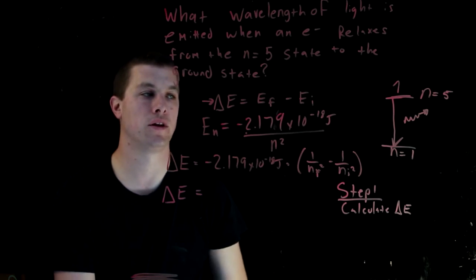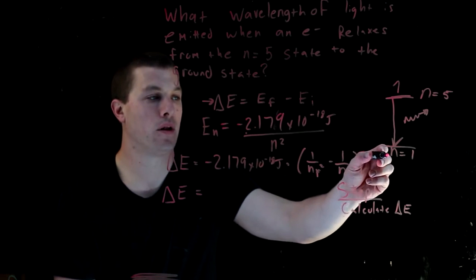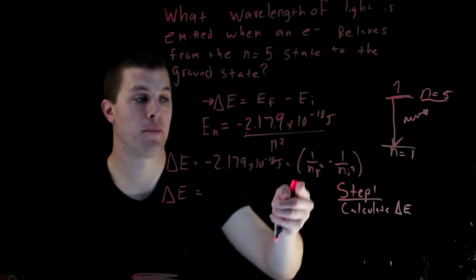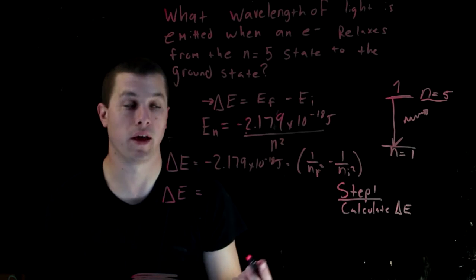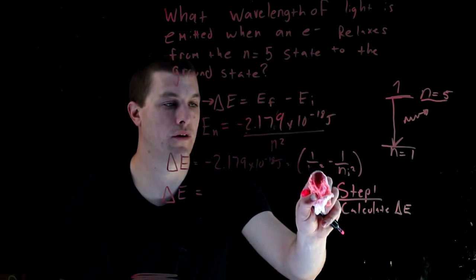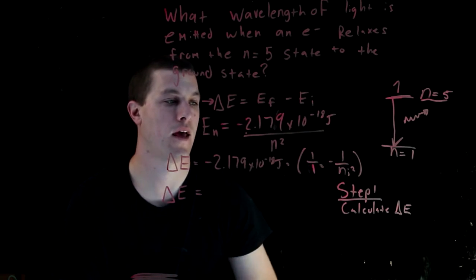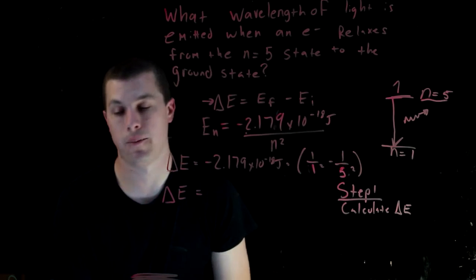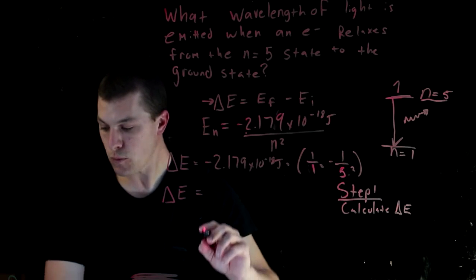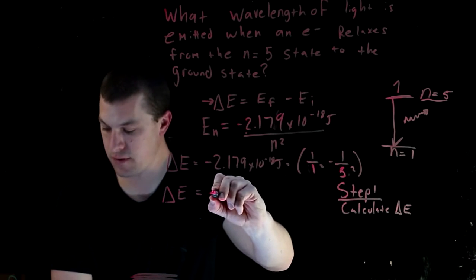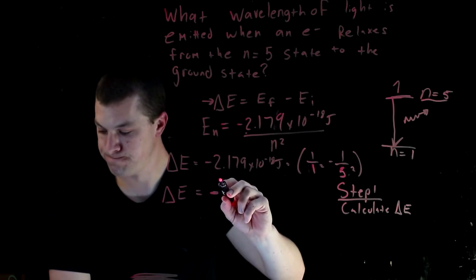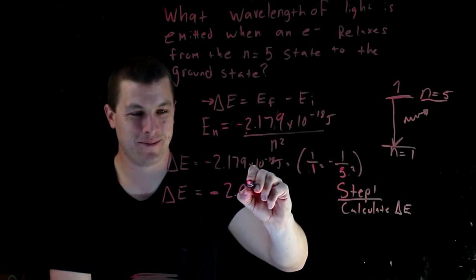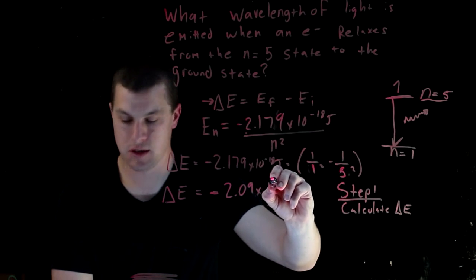For this problem, I'm starting at the n equals 5 state, so n_initial is 5, and my final state is n equals 1, the ground state. Plugging in 1 for n_final and 5 for n_initial, when I calculate that out, I get a change in energy of negative 2.09 times 10 to the minus 19 joules.